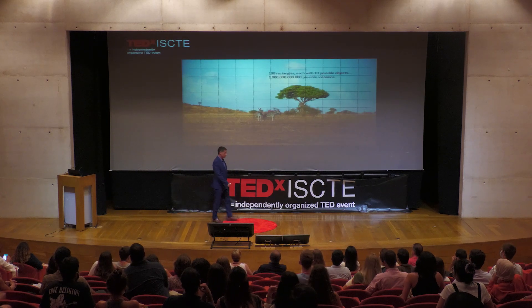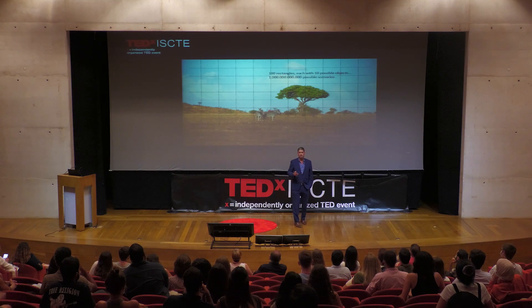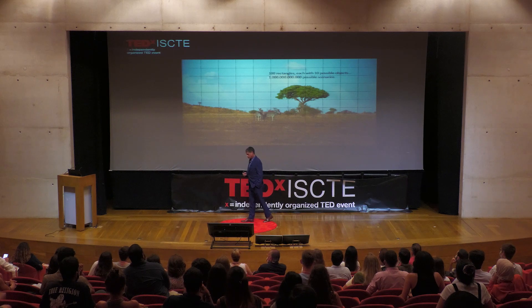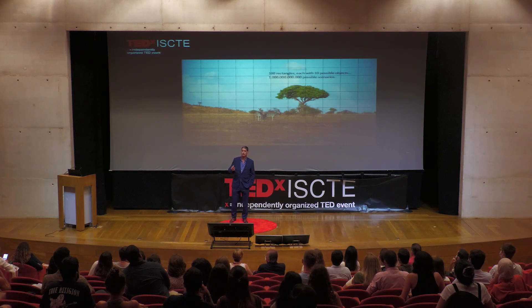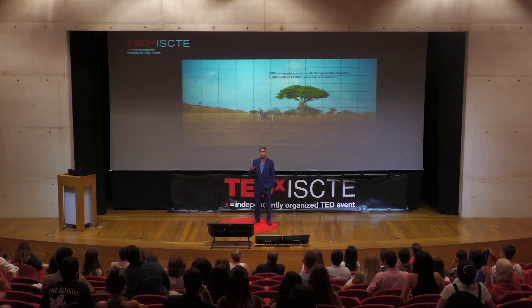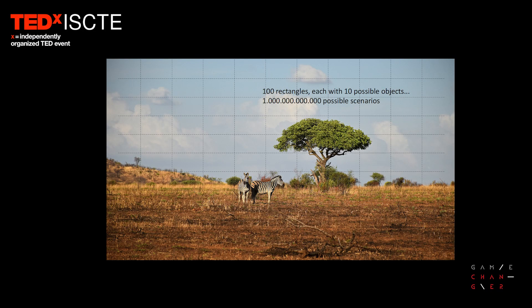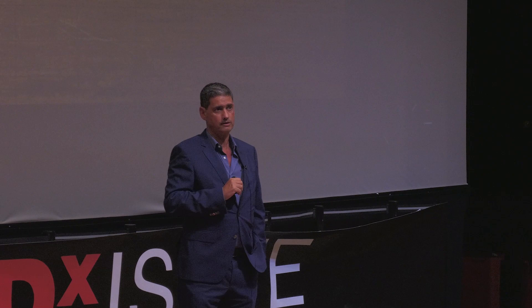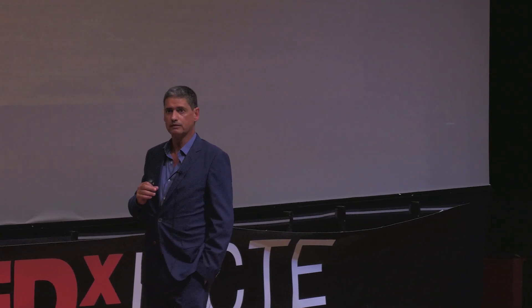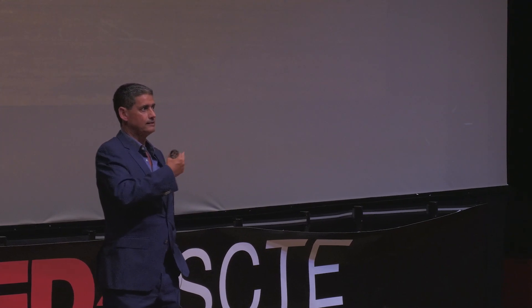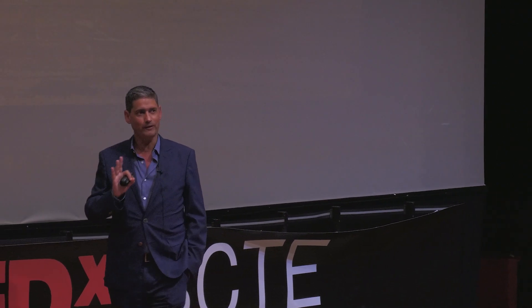Let's think about the monkey in the savannah. The monkey has to understand the world that it lives in. If you try to look at this flat set and divide it with a mesh of 10 by 10, and say that in each of the rectangles we can have 10 different objects, that would mean that the total possible sets the monkey had to learn was 10 to the power of 12 — with only these very small numbers.